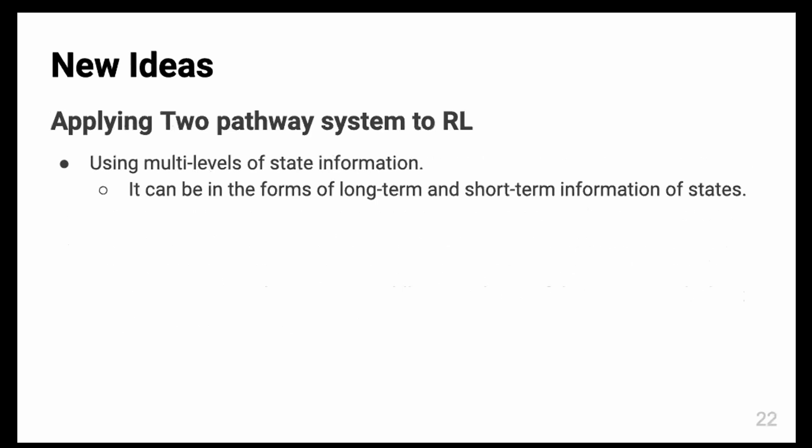For the new ideas, I have thought a little about this part. Maybe I can apply the two-pathway system to RL as multi-level state information. Actually, I am not sure whether I should apply this multi-level concept to state information or reward system. Anyway, it can be in the forms of long-term and short-term information, state information or reward.